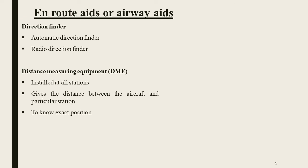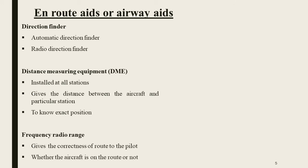Distance Measuring Equipment, DME. It is an LR station installed. It gives the exact position and provides information about the distance between a particular station and the aircraft.